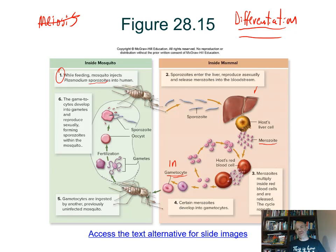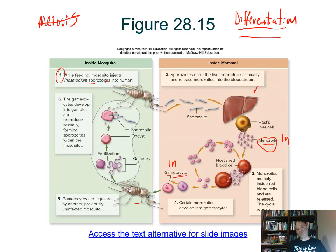The two gametes — two different cell types — combine in fertilization. Now we're back to diploid. But that doesn't last very long. They form an oocyst, and within there meiosis occurs to produce sporozoites. This happens in the salivary glands of the mosquito, and the mature sporozoites get transmitted into the next victim bitten. It is a complex life cycle.